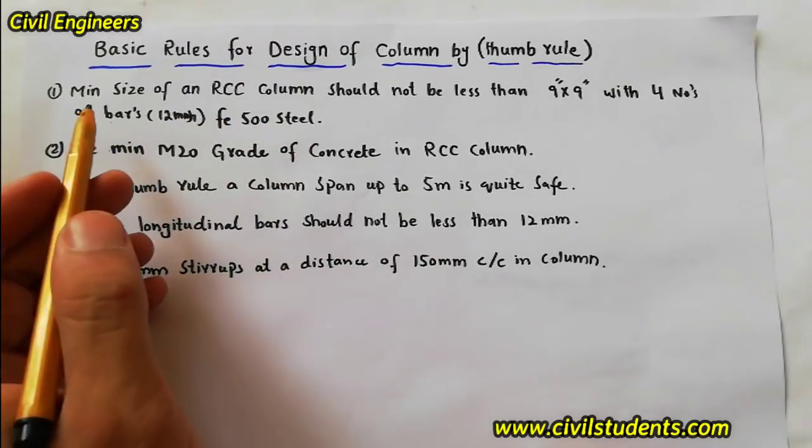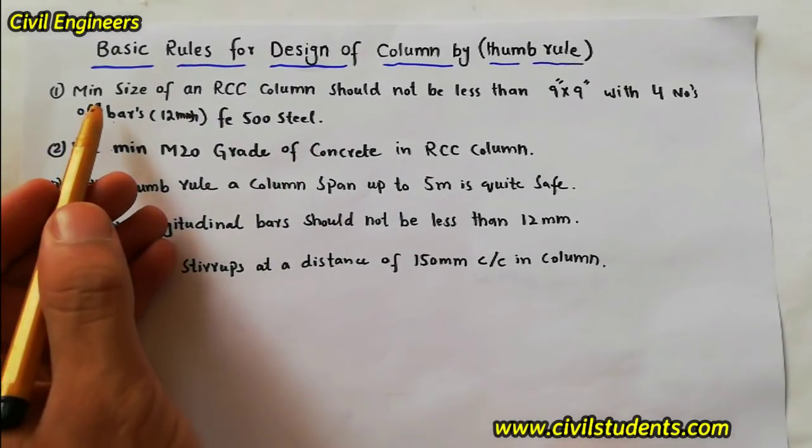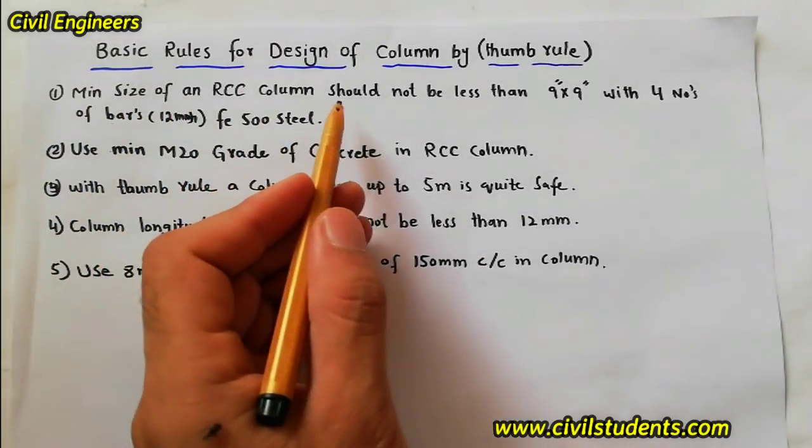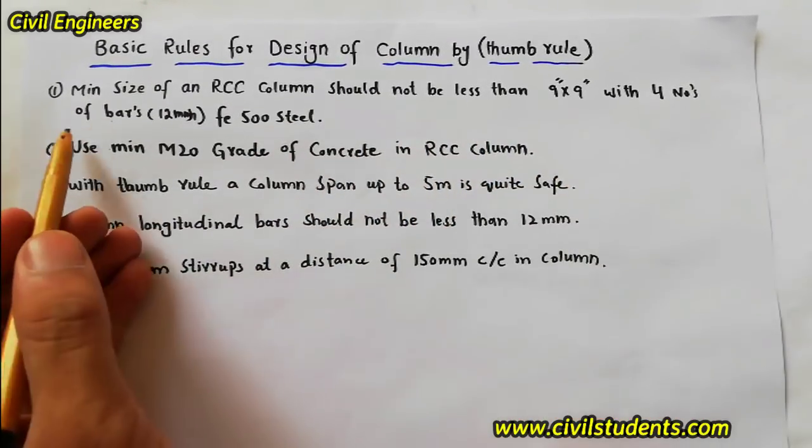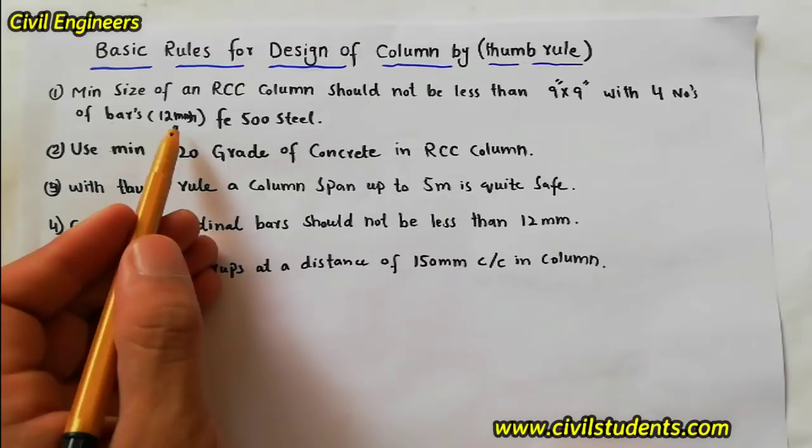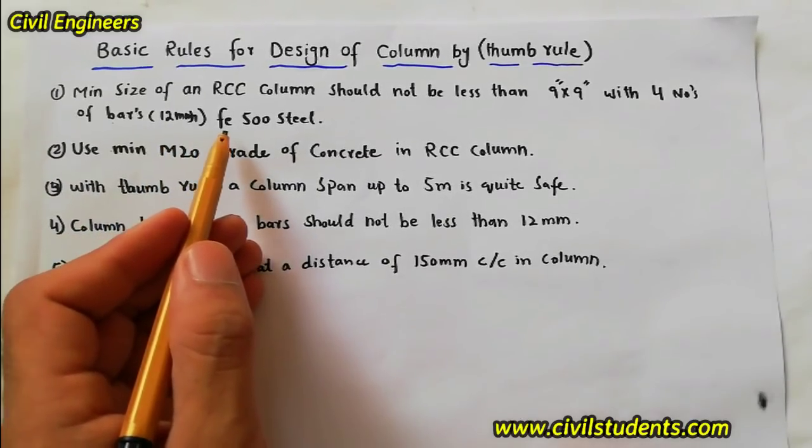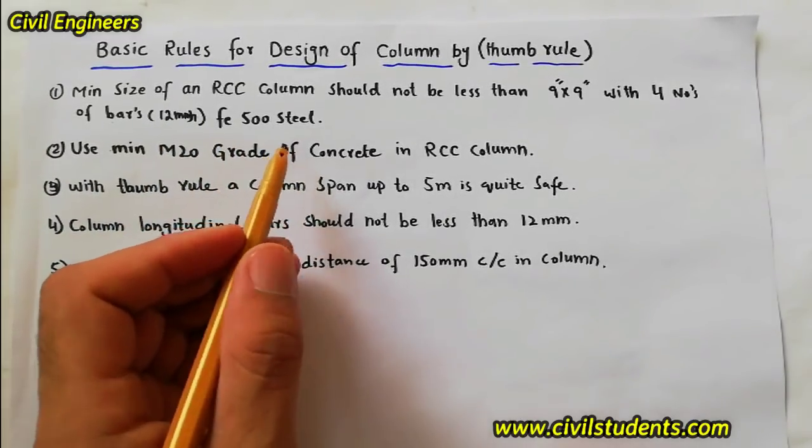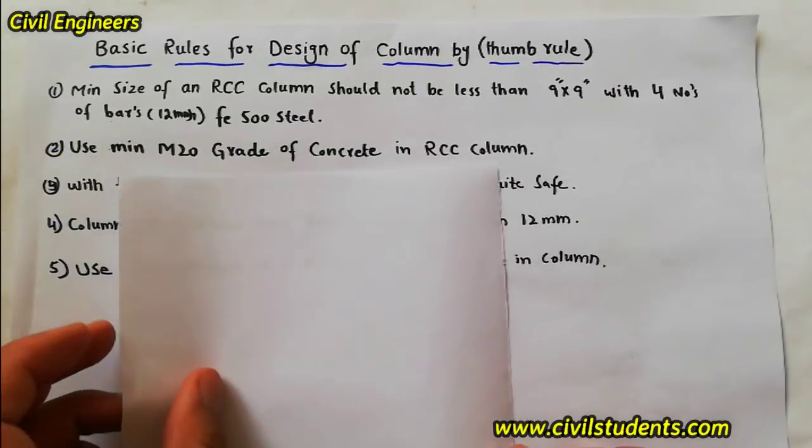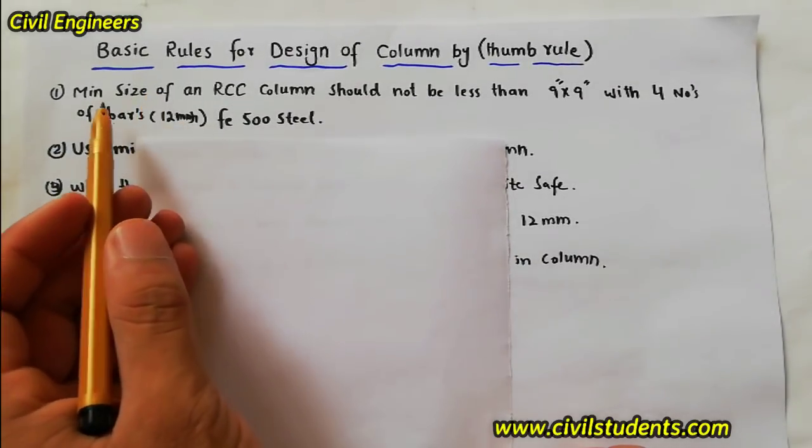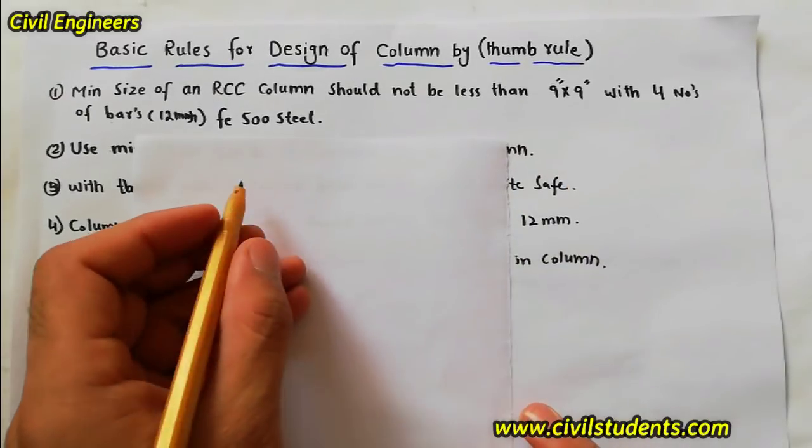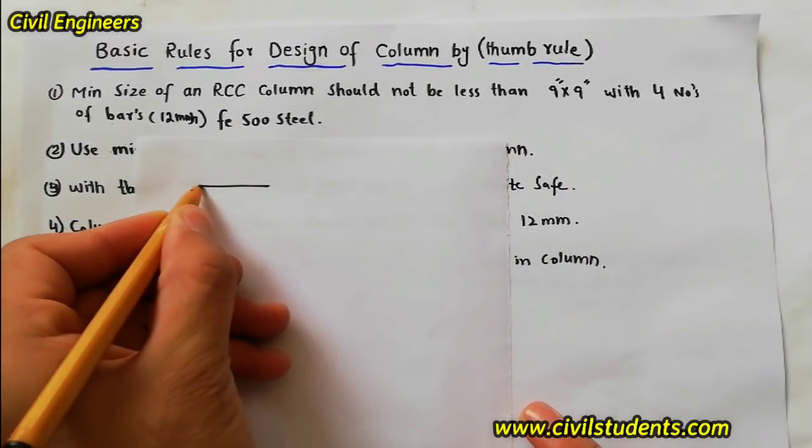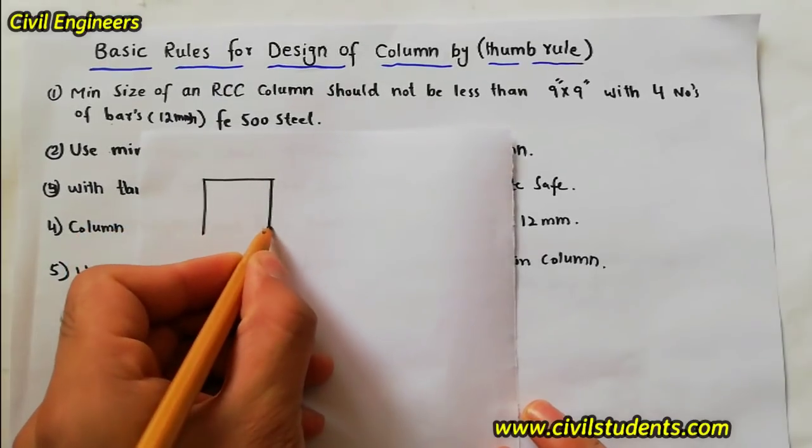First of all, by thumb rule, the first one is minimum size of an RCC column should not be less than 9 by 9 inch with four numbers of steel bars which should be 12mm and grade of steel should be Fe500. So I am giving a simple example for this. Minimum size of the column should not be less than 9 by 9 inch. Suppose this is the top section for the column.